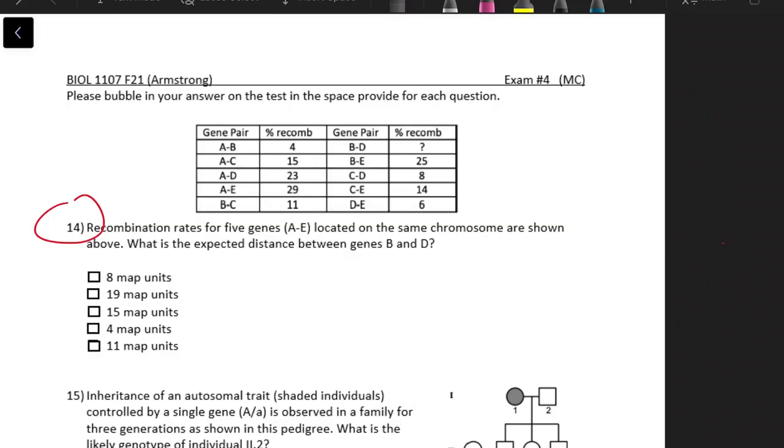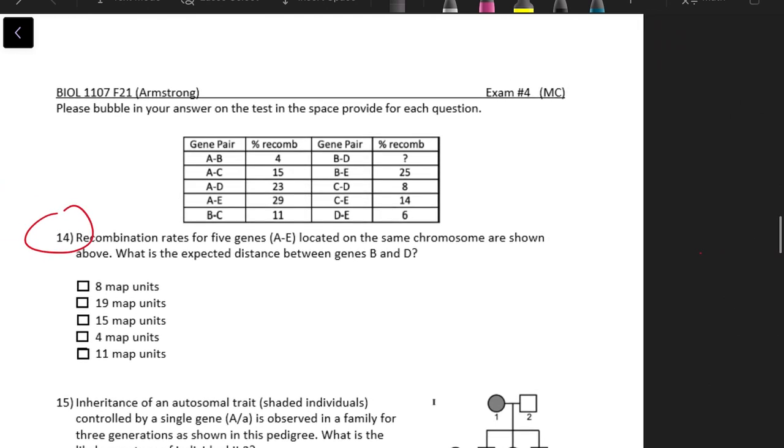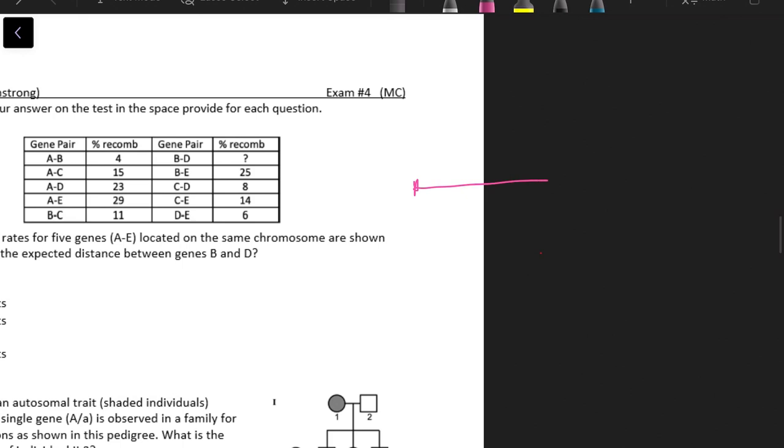All right, so number 14 is a fun one if you like doing these maps. Recombination rates for five genes a through e are located on the same chromosome as shown above. What is the expected distance between genes b and d? So anytime you're looking for expected distance, always start out by just building the gene map.